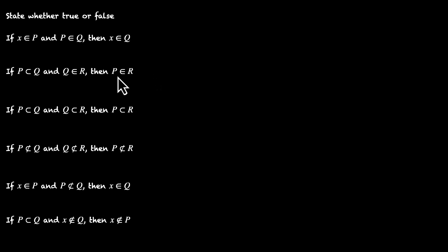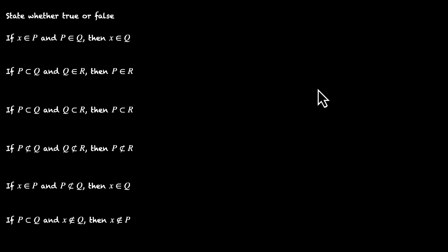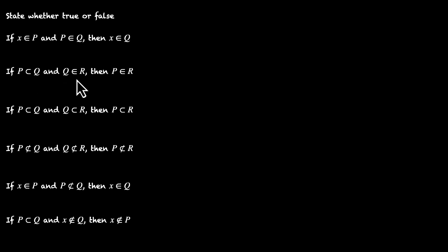But what if I told you that both of these statements are incorrect? Both of these are false. To understand what's really going on, we have to stop and take a step back. We need to understand the fundamental difference between these two signs: this sign means P is a subset of Q, and this sign means Q belongs to R. These two are different.